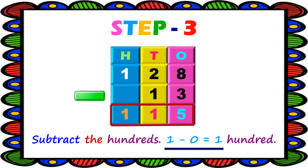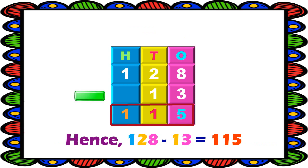Step 3: Subtract the hundreds. 1 hundred minus 0 hundred — since 0 means nothing, we get the same number 1. Write 1 in the hundreds column. Thus, 128 minus 13 is equal to 115.